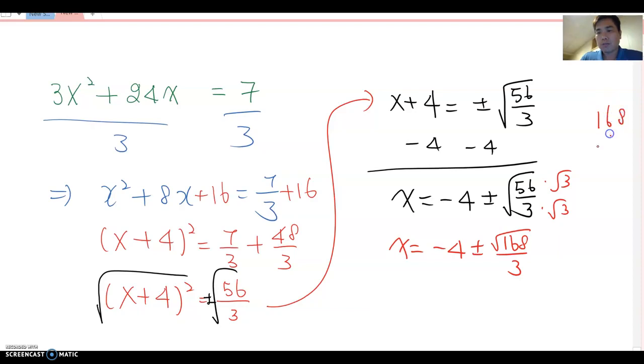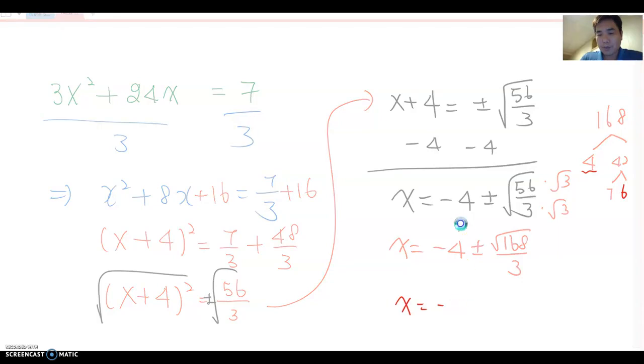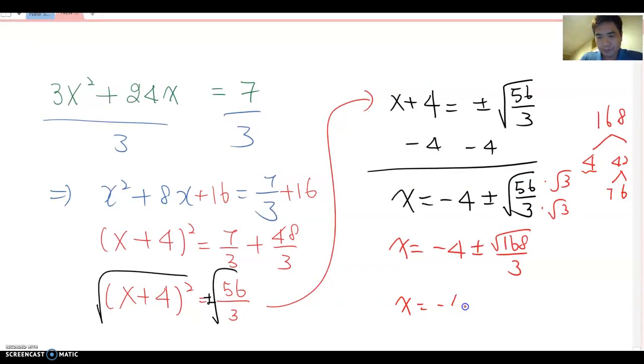Let's figure out whether 168 we can simplify. 168 means we can make 4 times 42, and then 7 times 6. As you see, root 4 is 2. Therefore, x equal to negative 4 plus and minus 2 root 42 over 3. That should be the final answer for this problem.